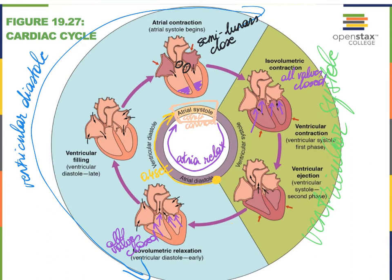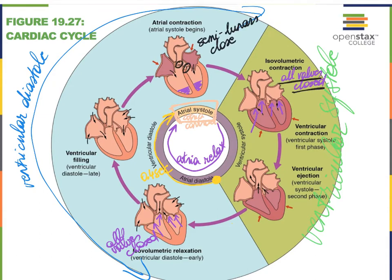Our atria begin to squeeze, and more and more blood collects into the ventricles. As that blood collects, it pushes up against the atrioventricular valves and forces them closed. Our semilunar valves were already closed, and now with the pressure of the blood building up in the ventricles, the AV valves close as well. For a very brief moment, all valves are closed — this is called isovolumetric contraction. Because all valves are closed, the blood is not going anywhere and the volume in the ventricles remains the same.